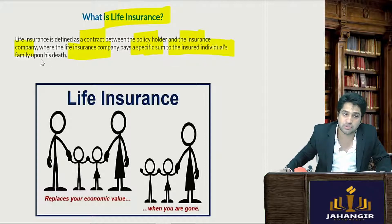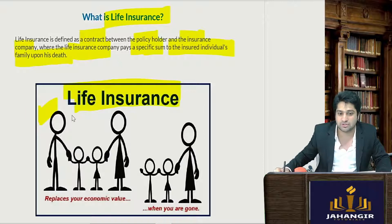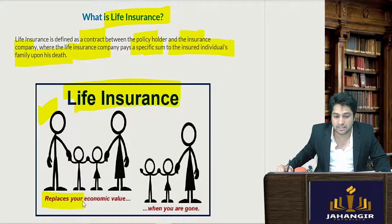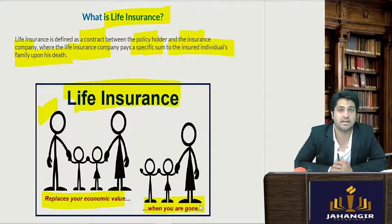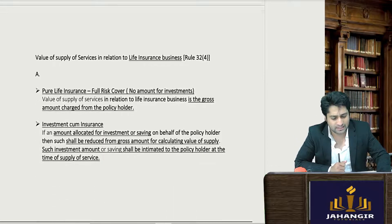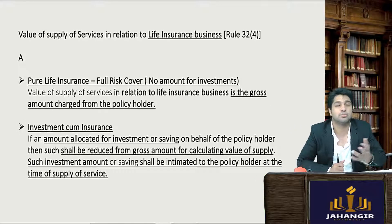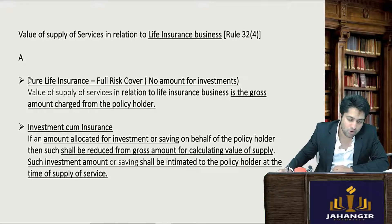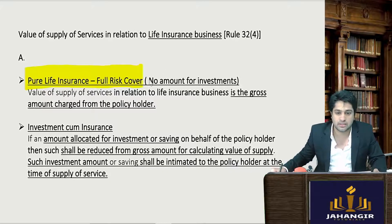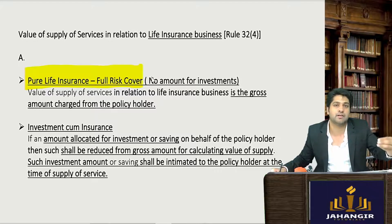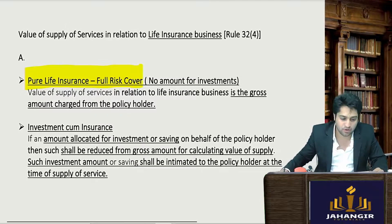So if this is a life insurance policy taken by a person and his life is insured, in case he dies the dependents will get a certain amount — it can replace your economic value when you are gone. The basic or pure vanilla one is a full risk cover or pure life insurance, where your entire premium is given to cover the risk. For example, in a time span of 20 years, you keep paying the premium.